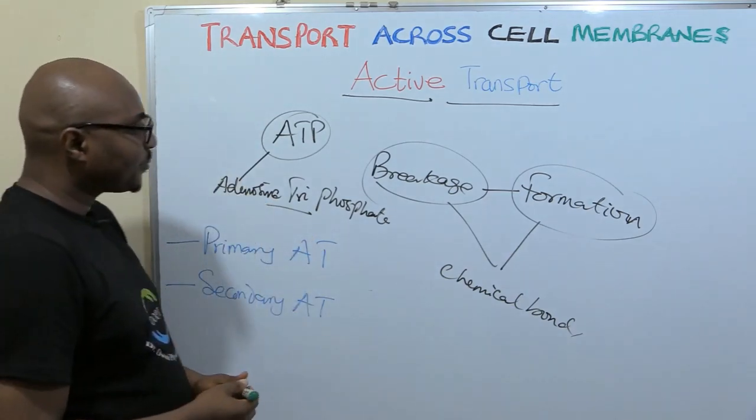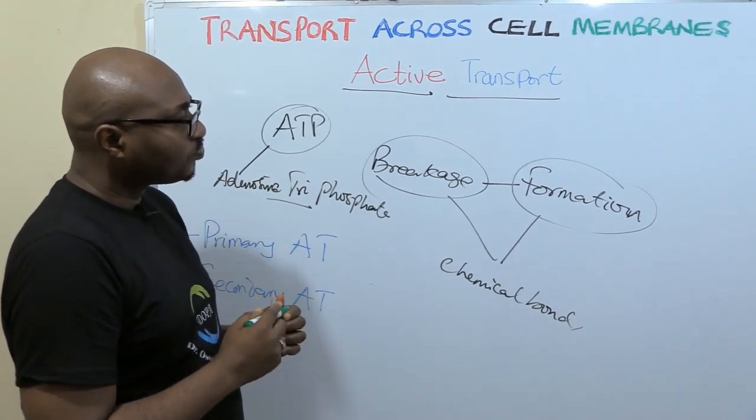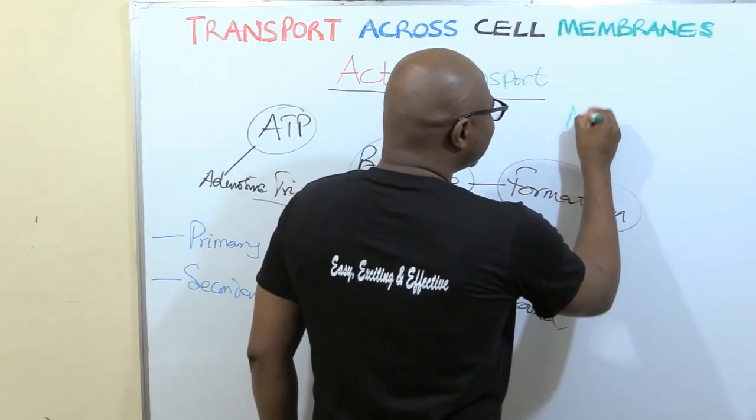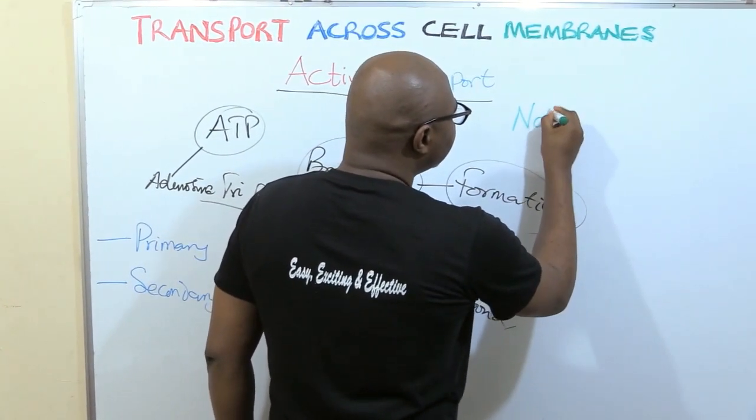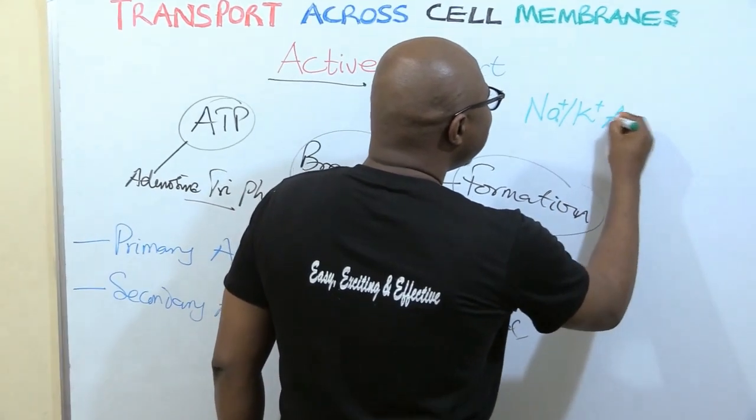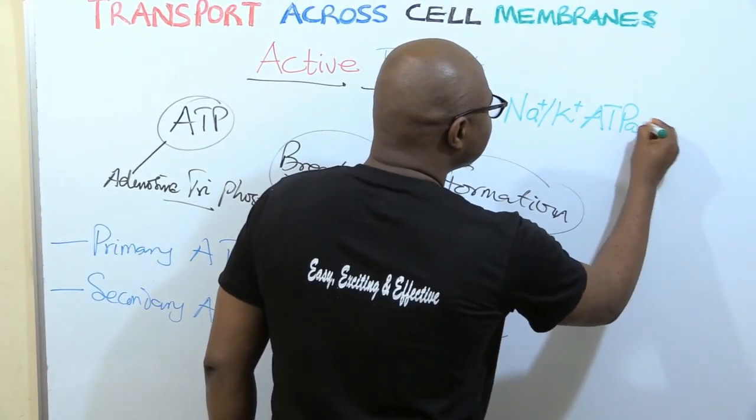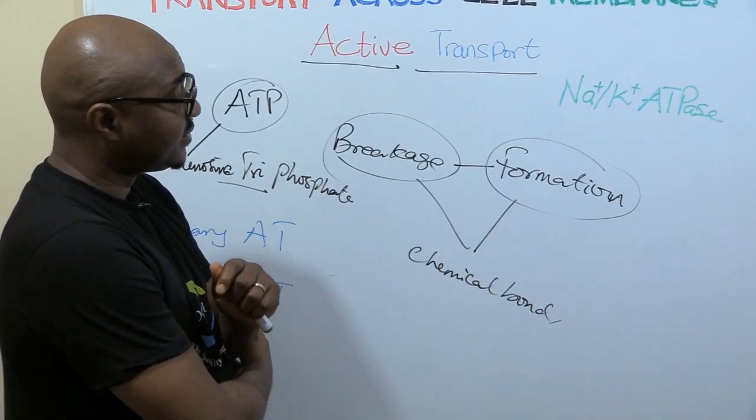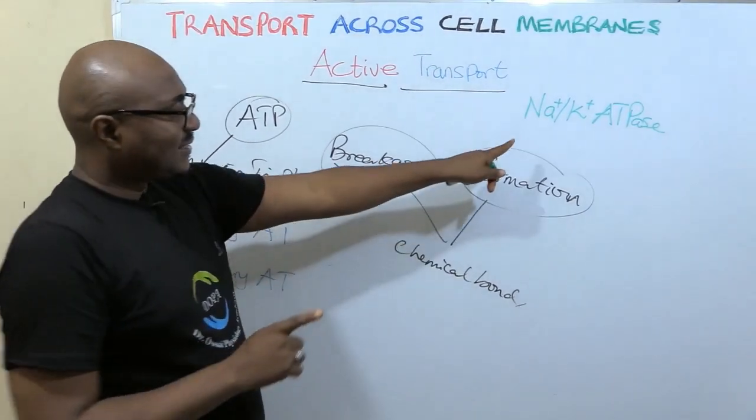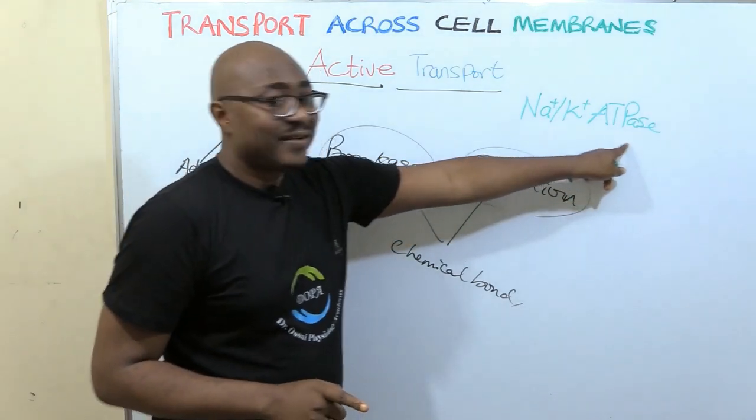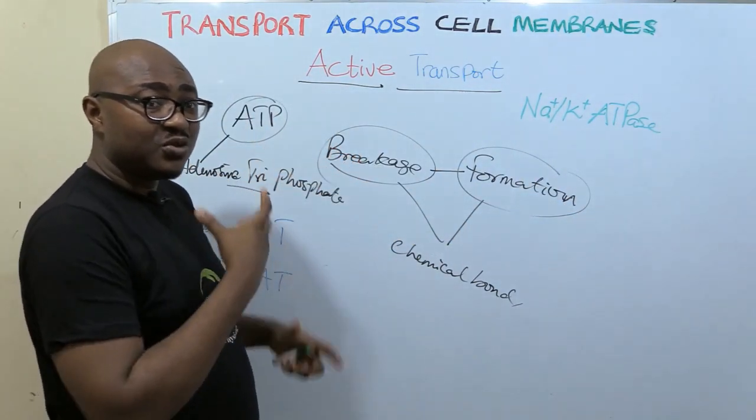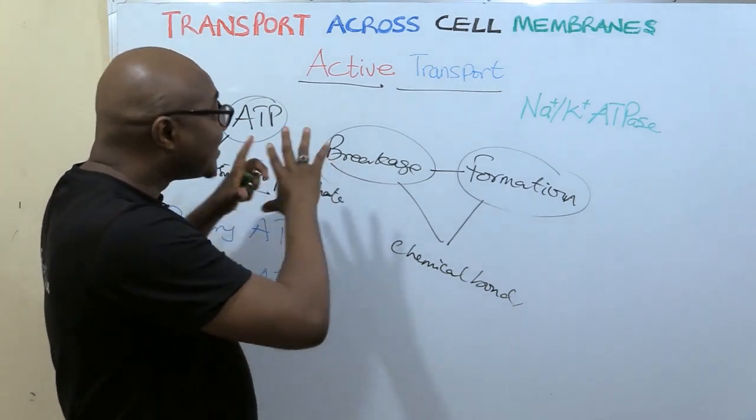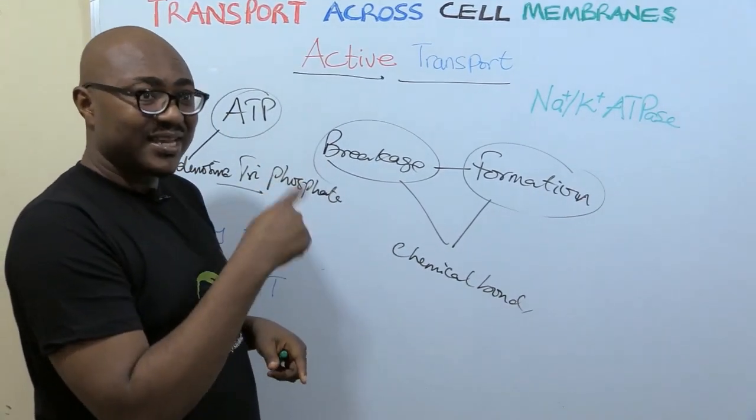Let's start with primary active transport. One of the best studied examples of primary active transport is the sodium-potassium ATPase. We are going to use it to understand what primary active transport really is. This carrier is a carrier protein. All active transport, they use a carrier protein.